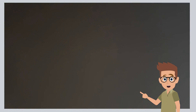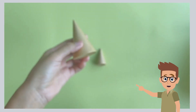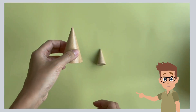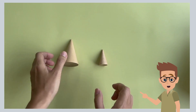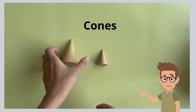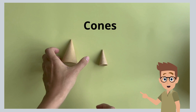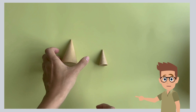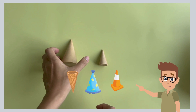Let's look at the next group of solids. These solids are cones. What are some examples of cones you have seen in real life? For example, an ice cream cone, a party hat, or a traffic cone.